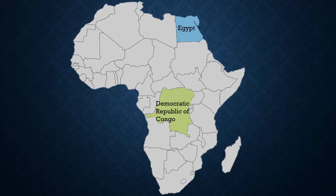The next political feature is known as Kenya. Kenya is located on the eastern tip of Africa in brown. The next country is Nigeria. Nigeria is shaded in orange on the west side of Africa.